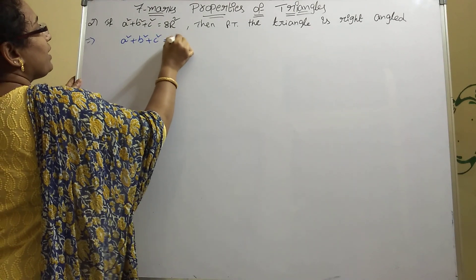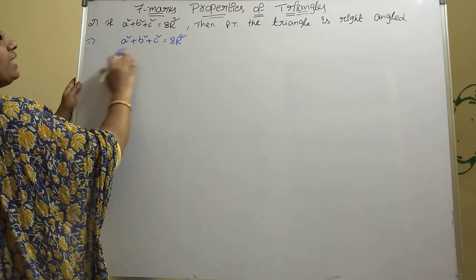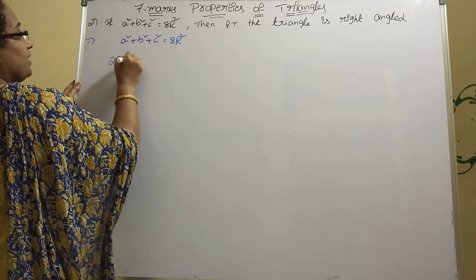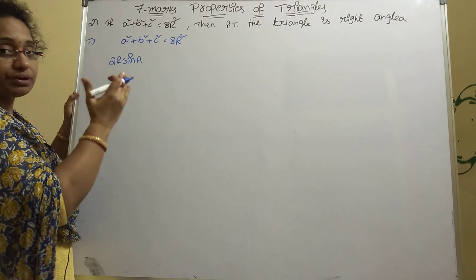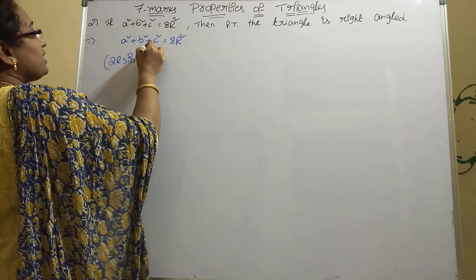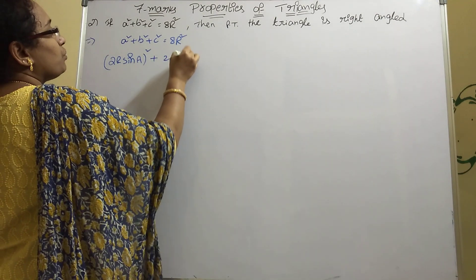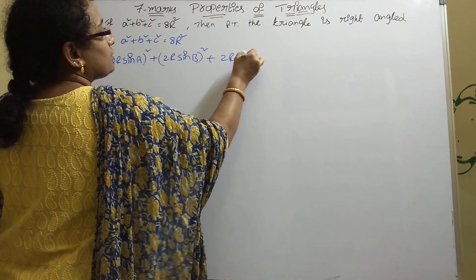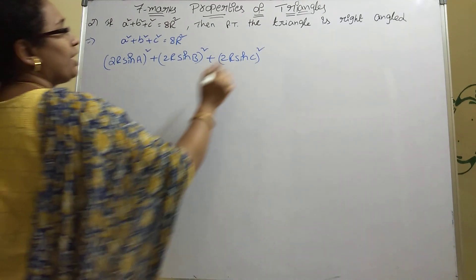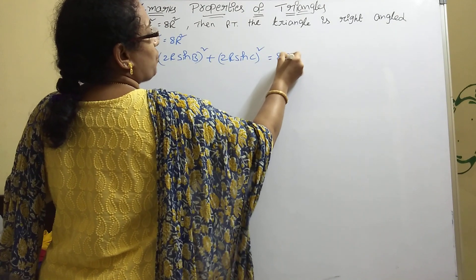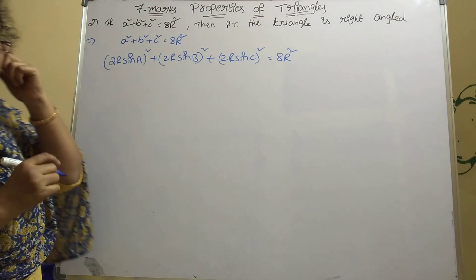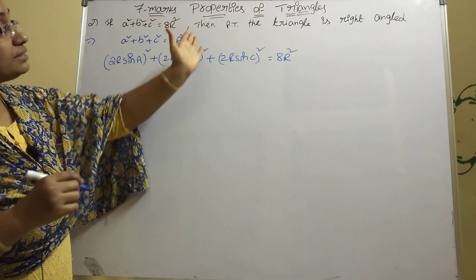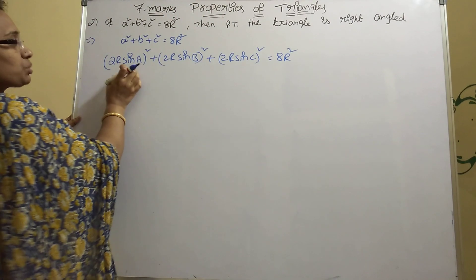Now apply those formulas. Substitute: (2R sinA)² + (2R sinB)² + (2R sinC)² = 8R². This is the given part — we write it as is. Now expand the squares.